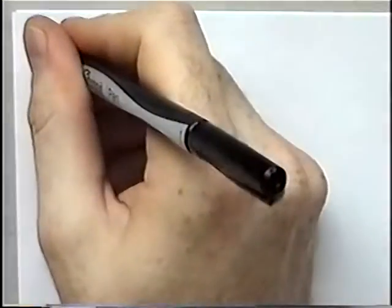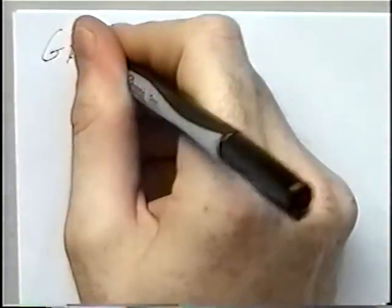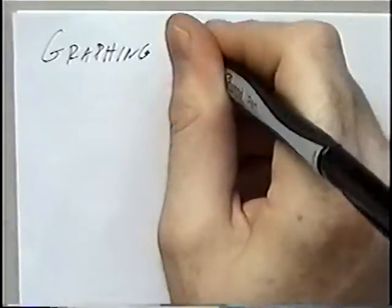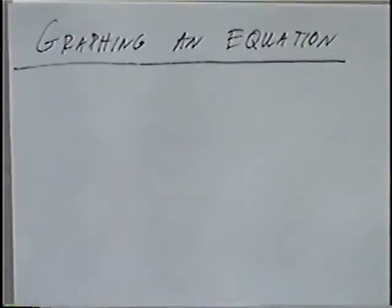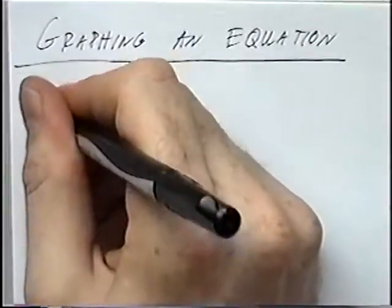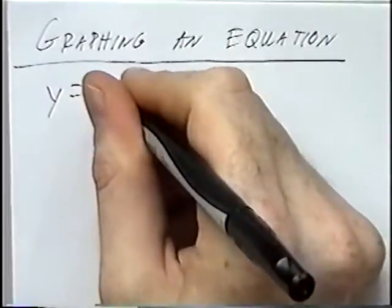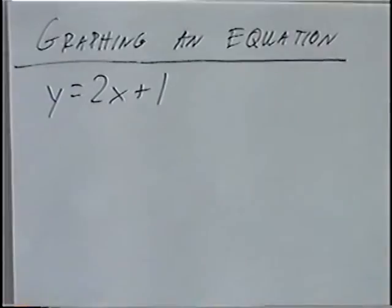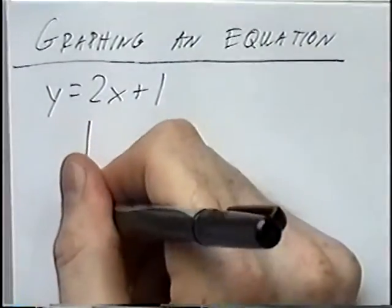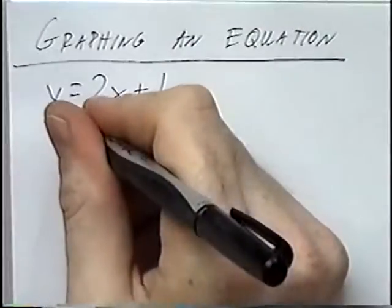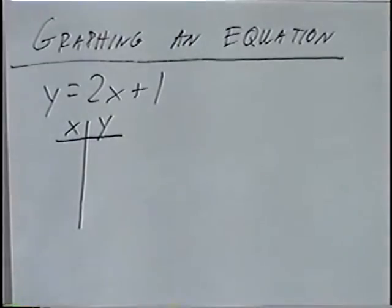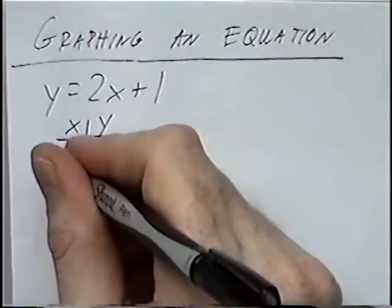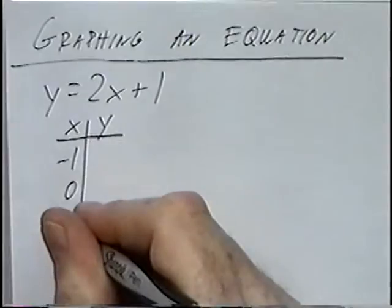The title of the first section today is graphing an equation. The first equation we'll graph is y equals 2x plus 1. To graph this equation, we can try a t-table or XY chart. We'll put x on the left side and y on the right side. When graphing an equation, you can use any numbers that you want.